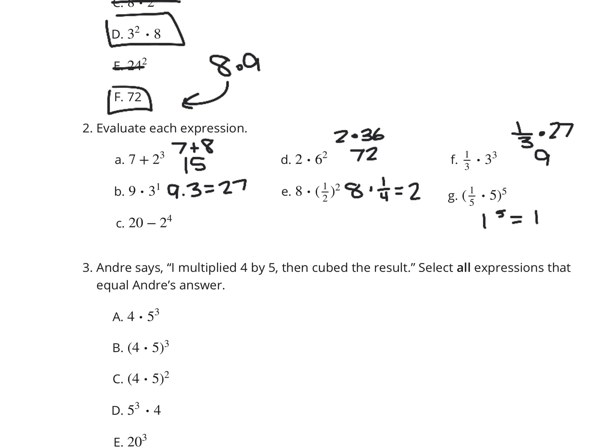And we have 20 minus 2 to the fourth. Well, that's 20 minus 2 to the fourth power is 2 times 2 is 4, times 2 is 8, times 2 is 16. And 20 minus 16 is 4.